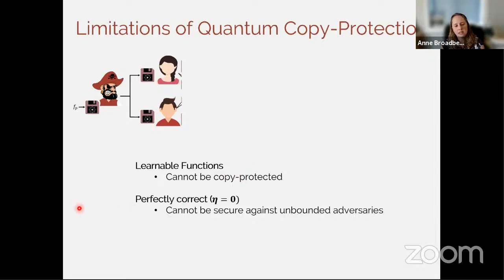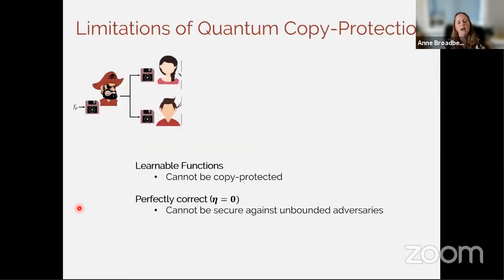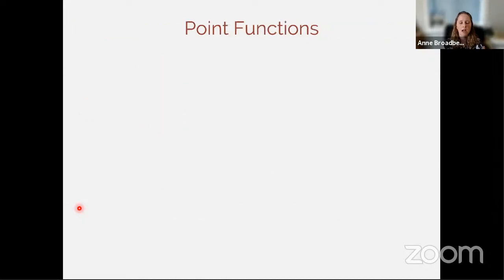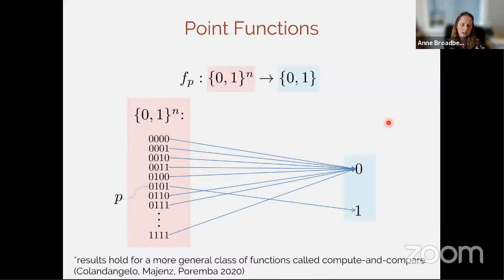If we're trying to do copy protection, there are things we can't even hope to prevent. If a function is learnable, the pirate can do a polynomial number of queries, learn the function, get a classical description, and share it — so learnable functions cannot be copy-protected. If we have perfect correctness, it cannot be copy-protected against unbounded adversaries, because the adversary can repeat this procedure to get the entire truth table and share it. We'll focus mostly on point functions: a relatively easy family of functions, not learnable, that single out a single point where the function evaluates to one and zero everywhere else.